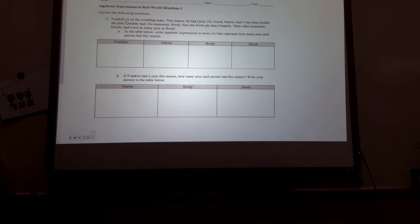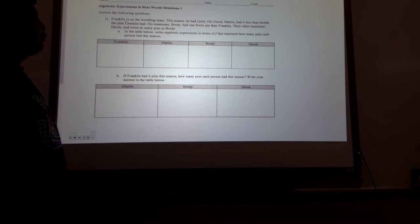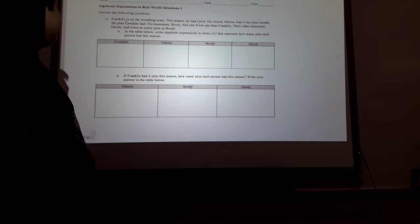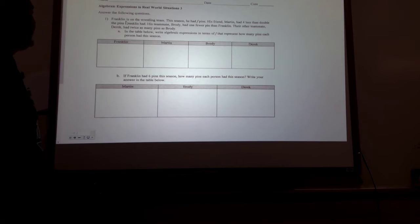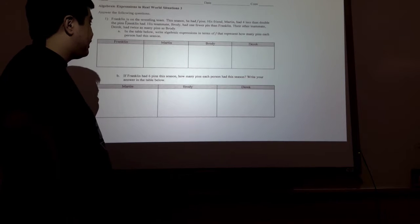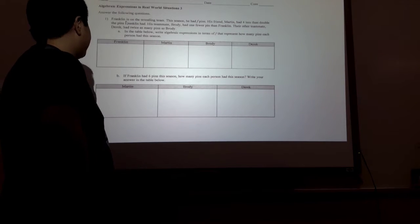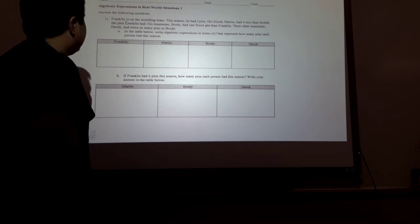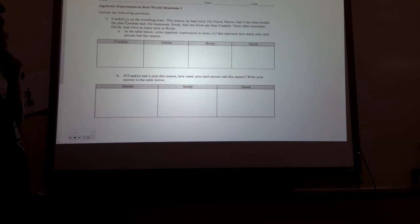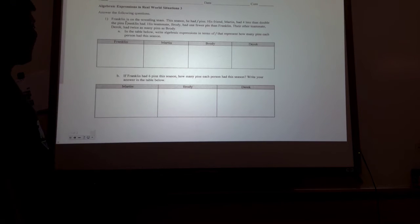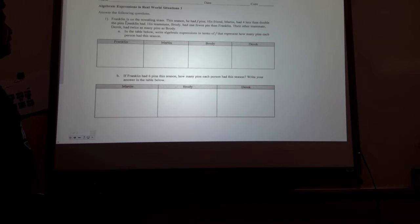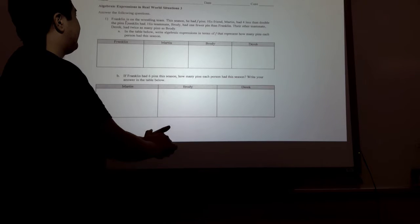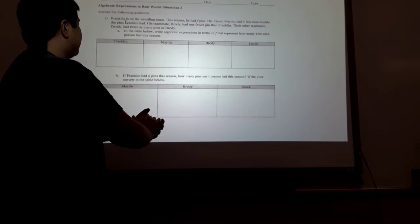Franklin is on the wrestling team. This season he had F pins. His friend Martin had four less than double the pins that Franklin had. His teammate Brody had one fewer pin than Franklin. His other teammate Derek had twice as many pins as Brody. In the table below, I'll write an algebraic expression in terms of F that represents how many pins each person had this season.